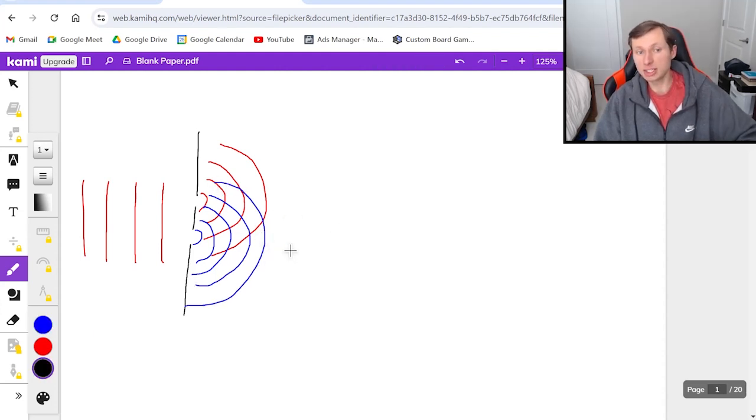Wherever the lines intersect with each other, this is known as constructive interference - here, here, here, and all over the place where these lines intersect.